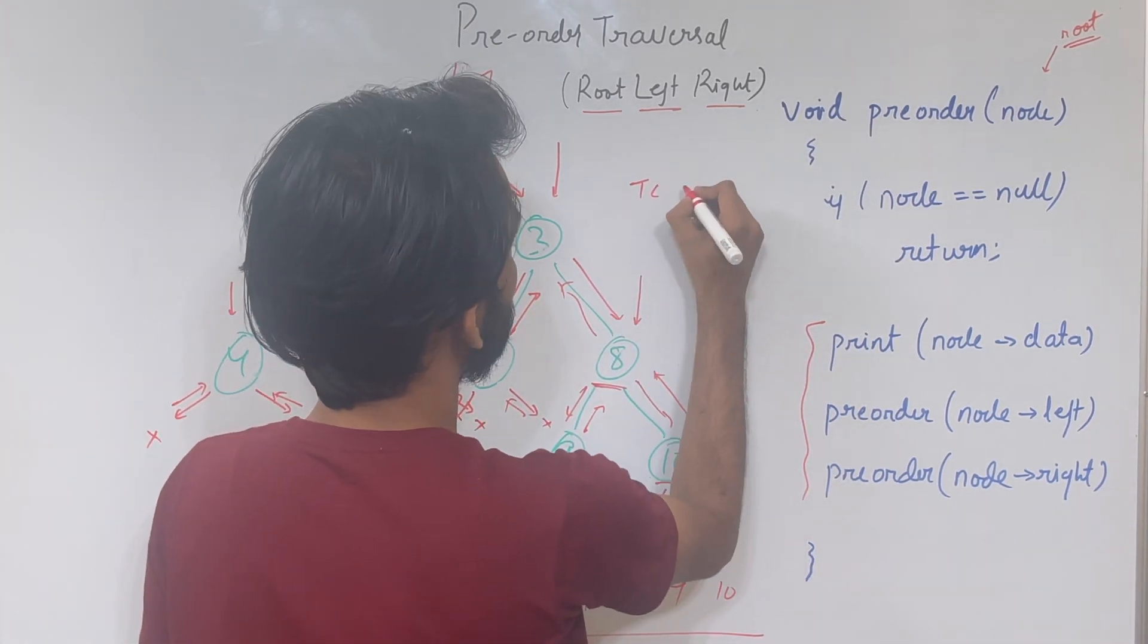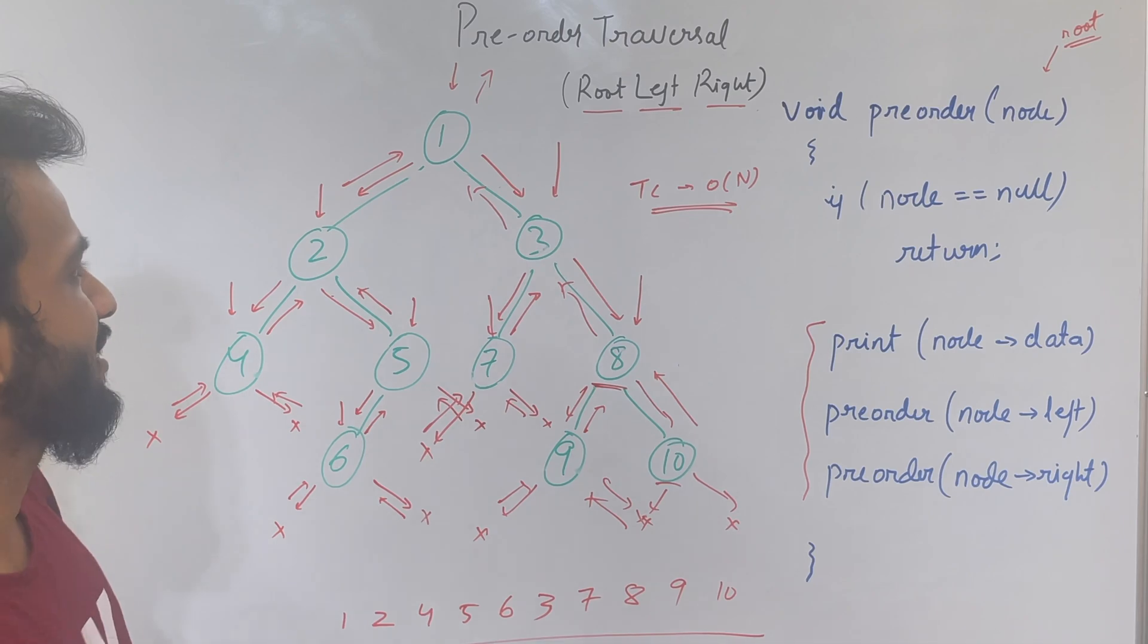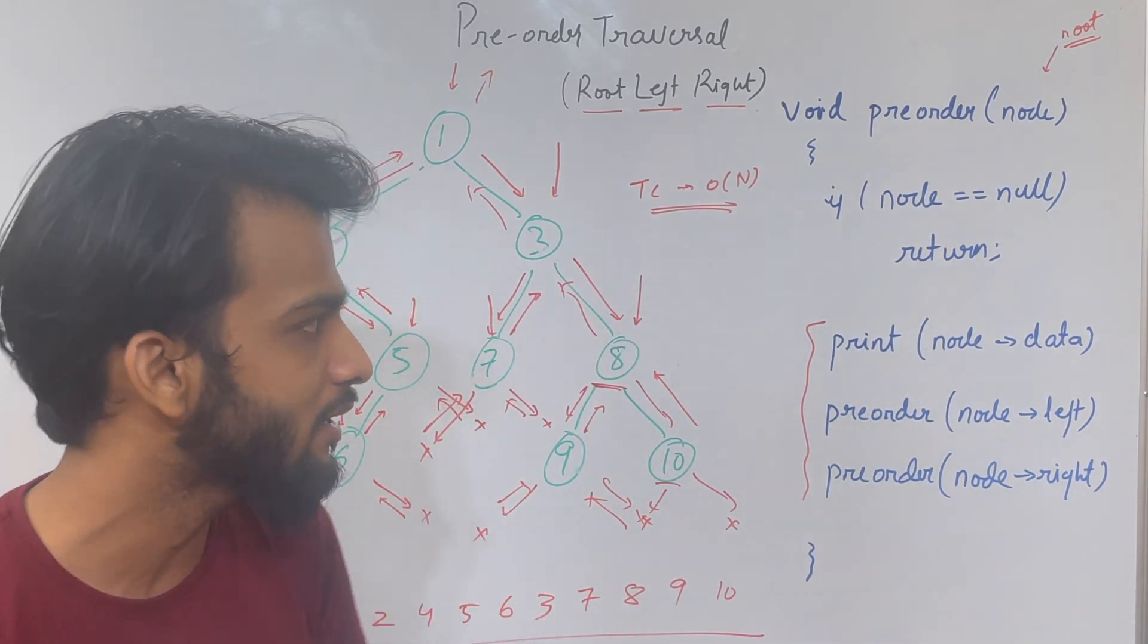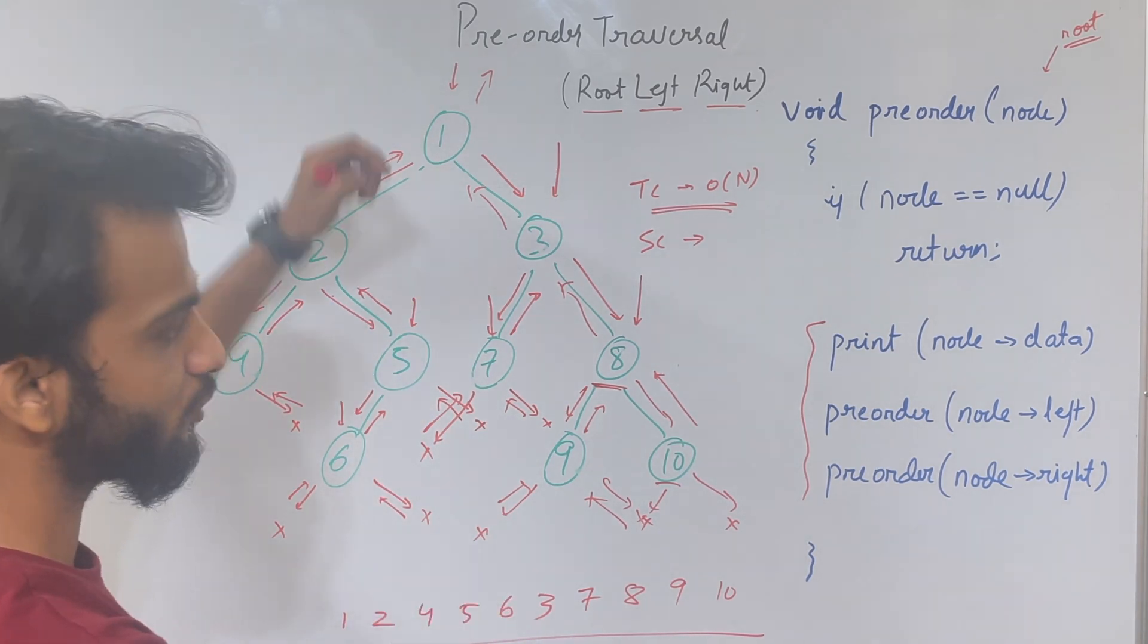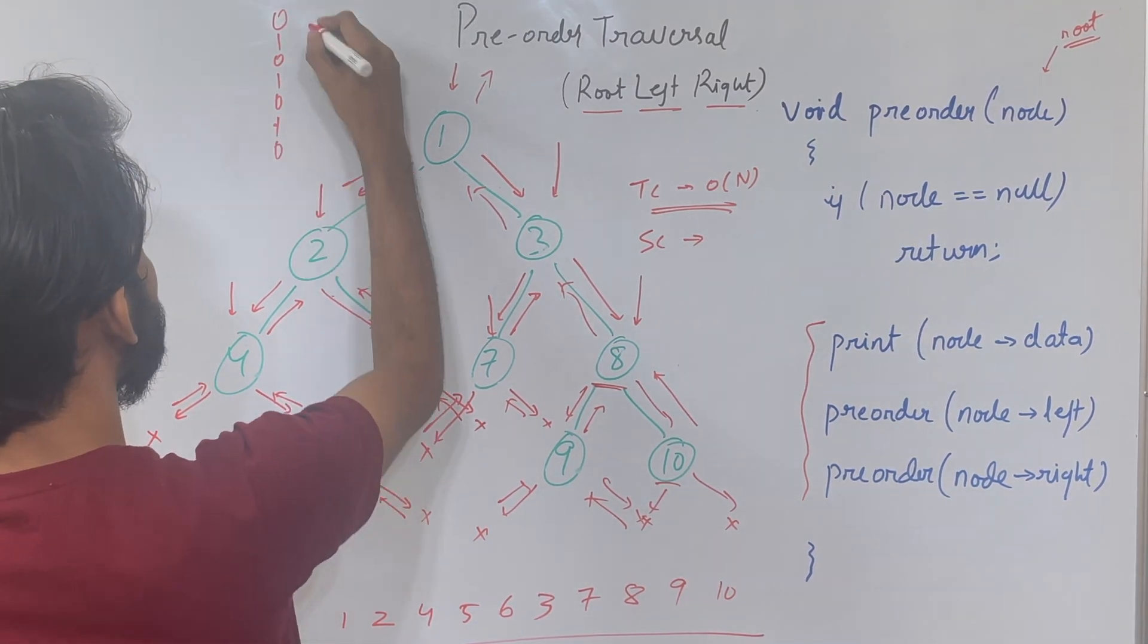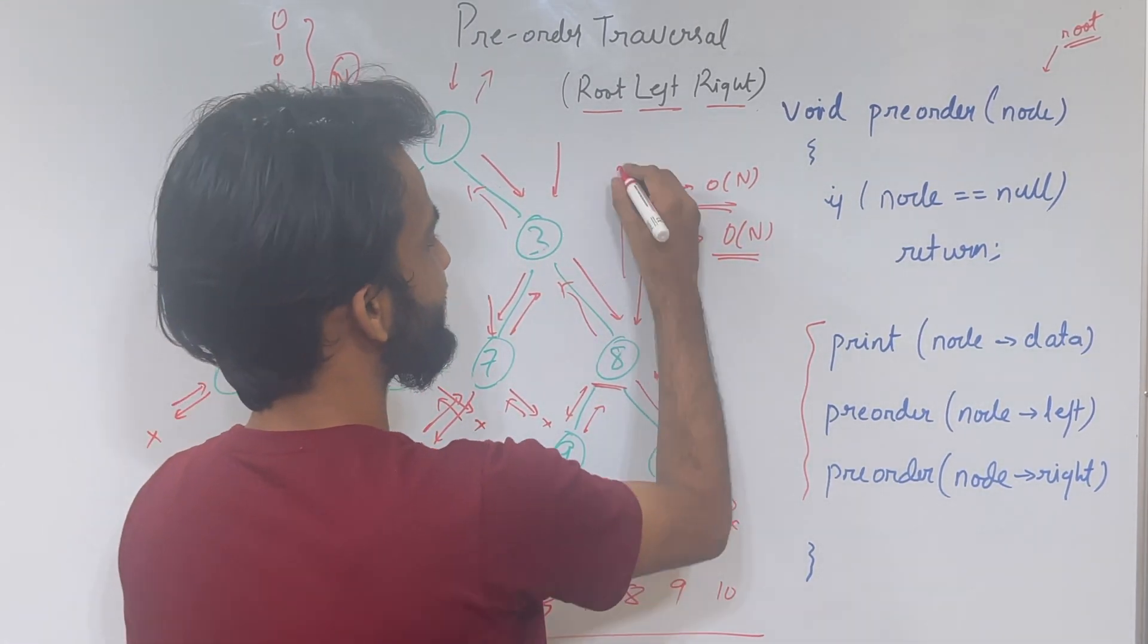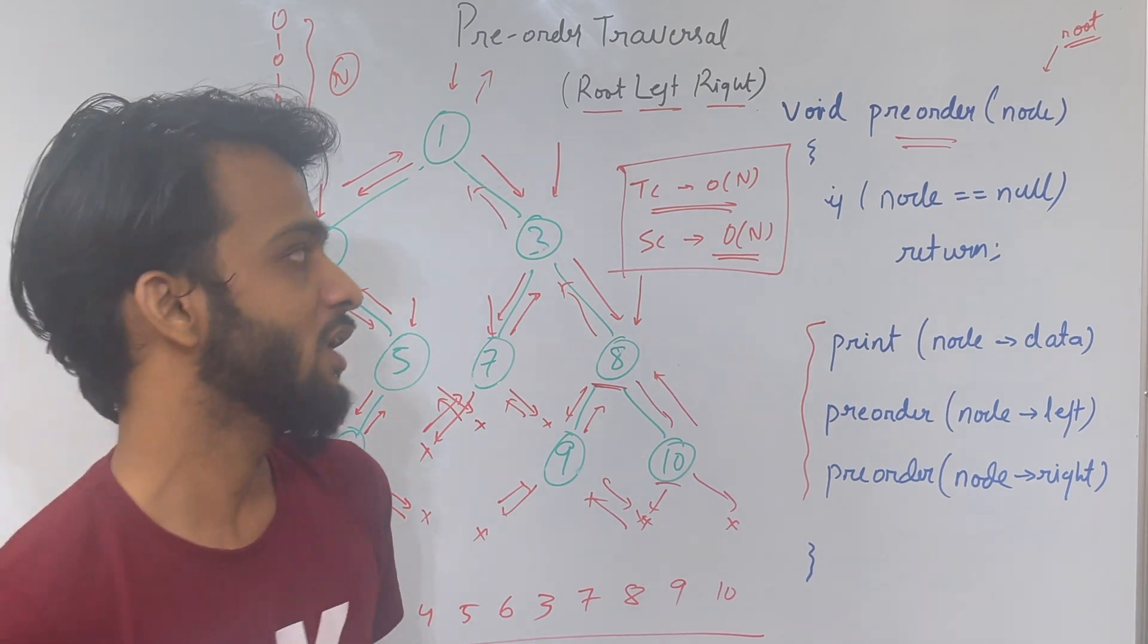The time complexity is O(n), where n is the number of nodes. Why? Because however many nodes there are, that many times you are going. So the time complexity is O(n). The space complexity is the auxiliary space of the height of the tree. In the worst case, the height of the tree can be skewed. So at max, the auxiliary space used in recursion can be O(n). This is the time and space complexity for pre-order traversal.